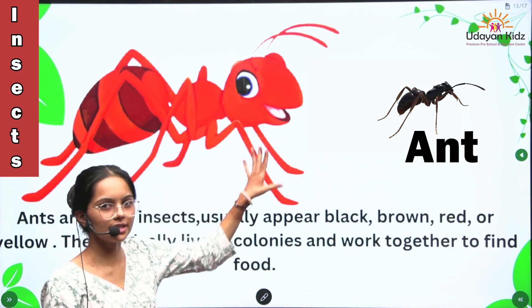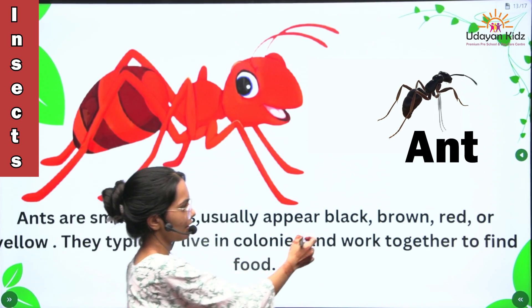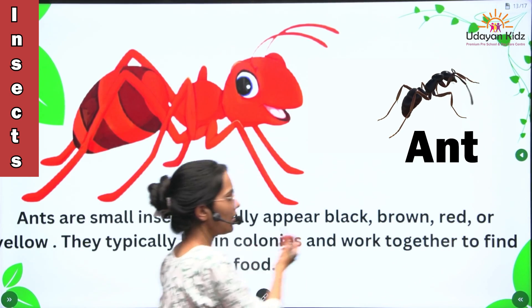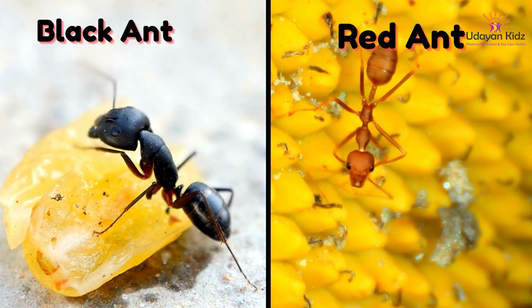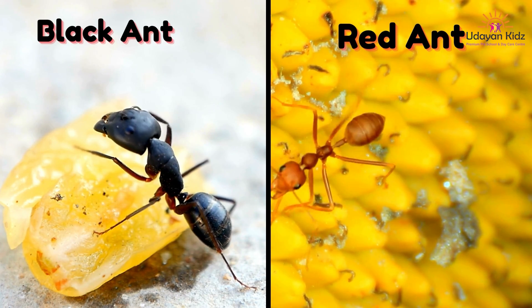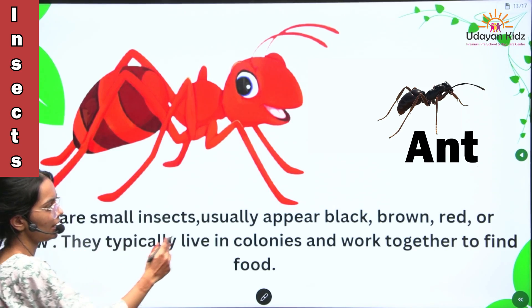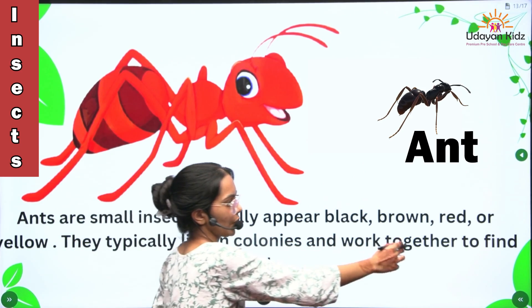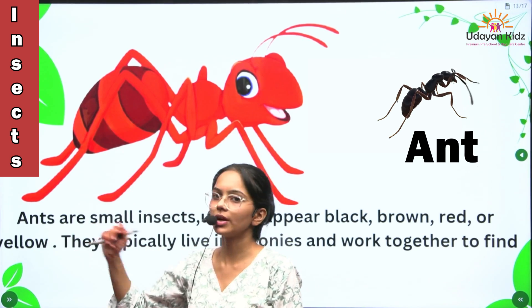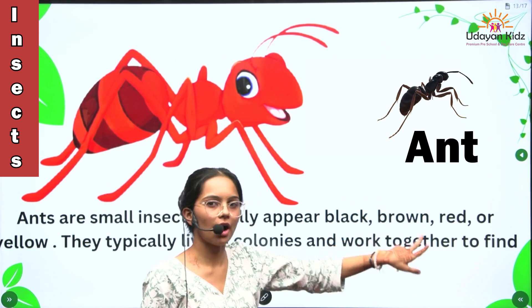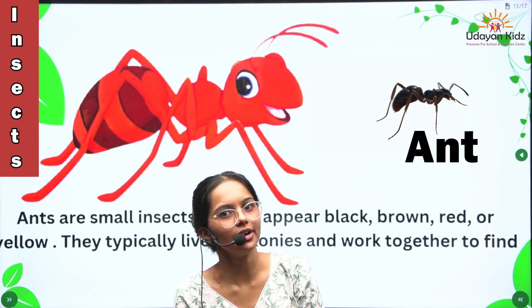This is ant. Ants are small insects, usually appearing black, brown, red or yellow. They typically live in colonies and work together to find food. Ant colors are yellow, black, brown and red. And they work together to find food.